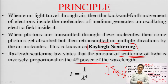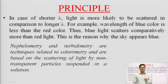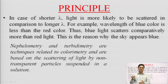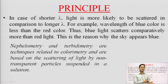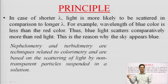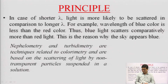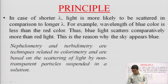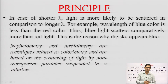Rayleigh used this as a basis to explain why the sky is blue. The visible white light coming from the sun has all individual wavelengths of the VIBGYOR spectrum. Blue has a short wavelength and red has a long wavelength. Short wavelength blue light is scattered more in the atmosphere, which is why the sky appears blue to us. In the case of shorter wavelengths, light is more likely to be scattered compared to longer wavelengths.